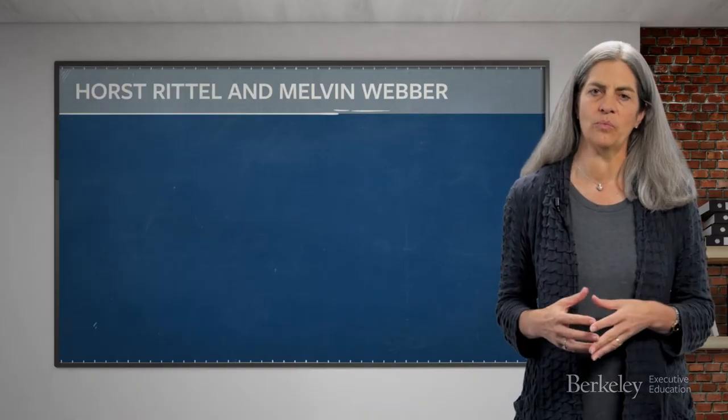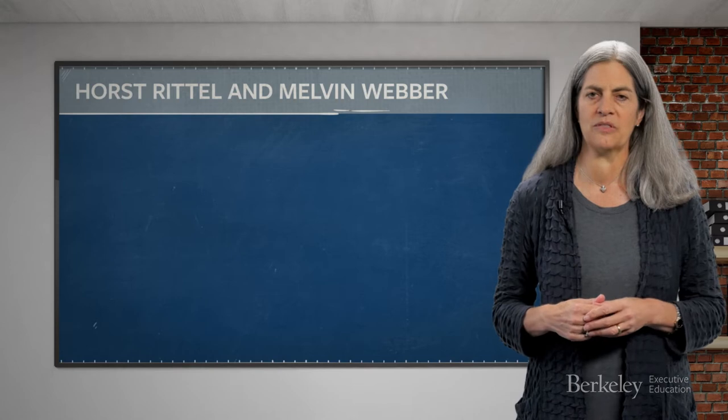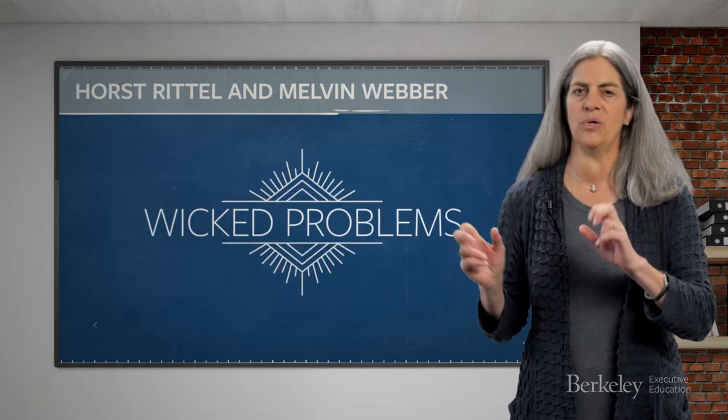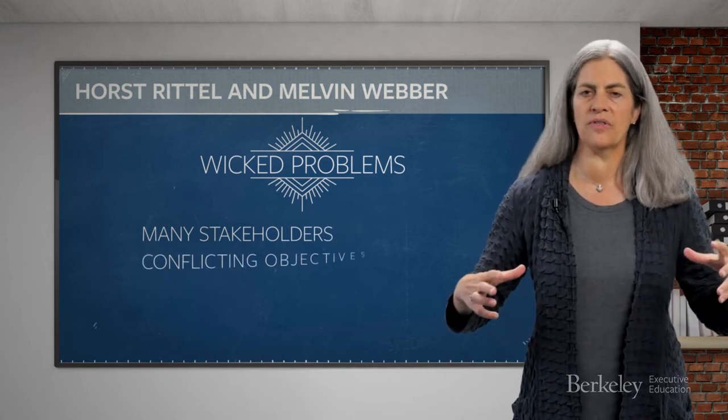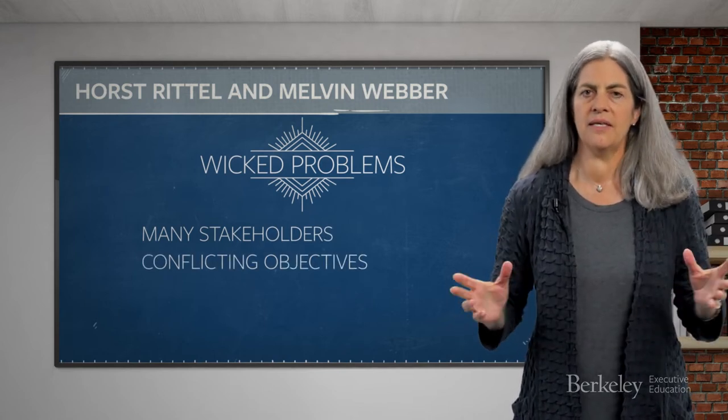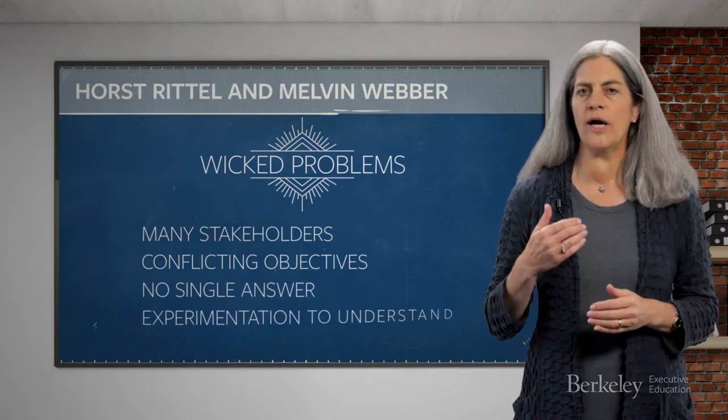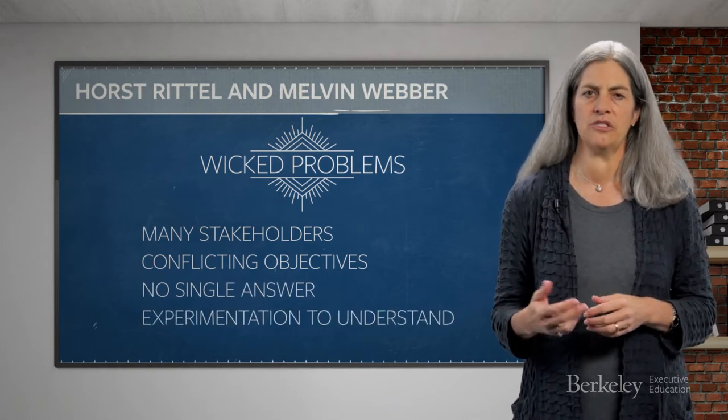We are now dealing with what Horst Rittel and Melvin Webber, faculty in the College of Environmental Design at UC Berkeley, called wicked problems. These are problems that have many stakeholders, often with conflicting objectives, that have no single answer, and that require probing and experimentation to understand. While Rittel and Webber focused on urban planning, think about how difficult it is to design a downtown park, for example. Their work applies to your jobs as product managers as well.